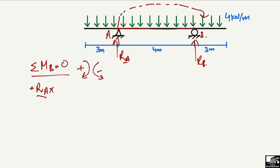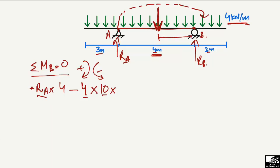The moment arm for RA is from A to B, which is 4 meter. The distributed load acts downward and to the left of B, creating an anticlockwise moment about B, so it is taken as negative: minus 4 multiplied by 10 (the total load length). The resultant of the distributed load acts at the center of the beam, which is 2 meter to the left of B, so the moment arm is 2 meter. Summation of moments at B = 0.